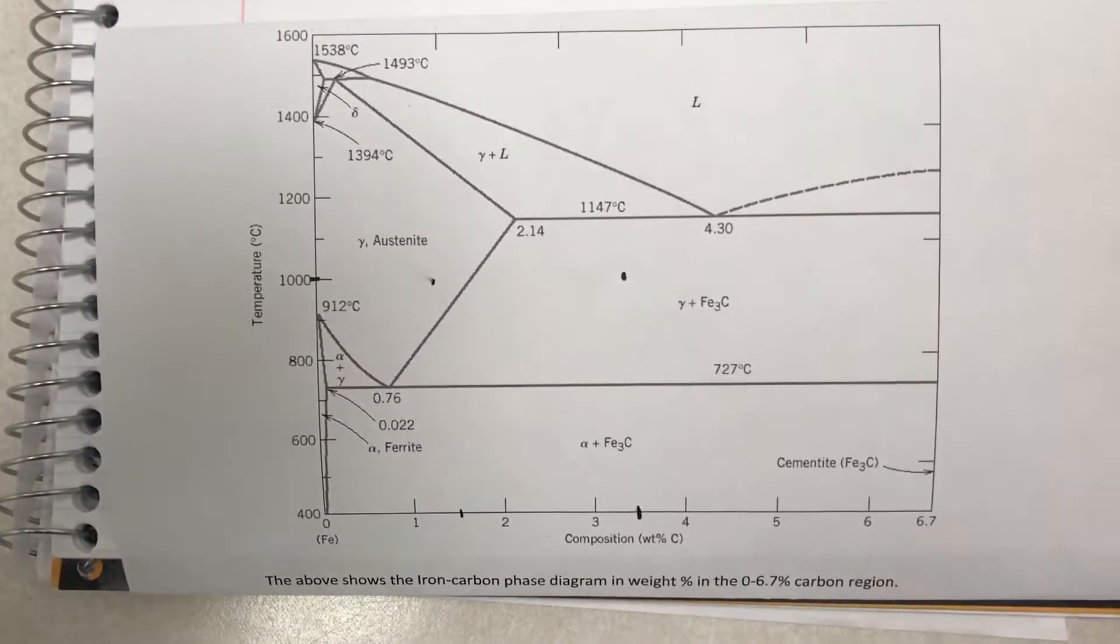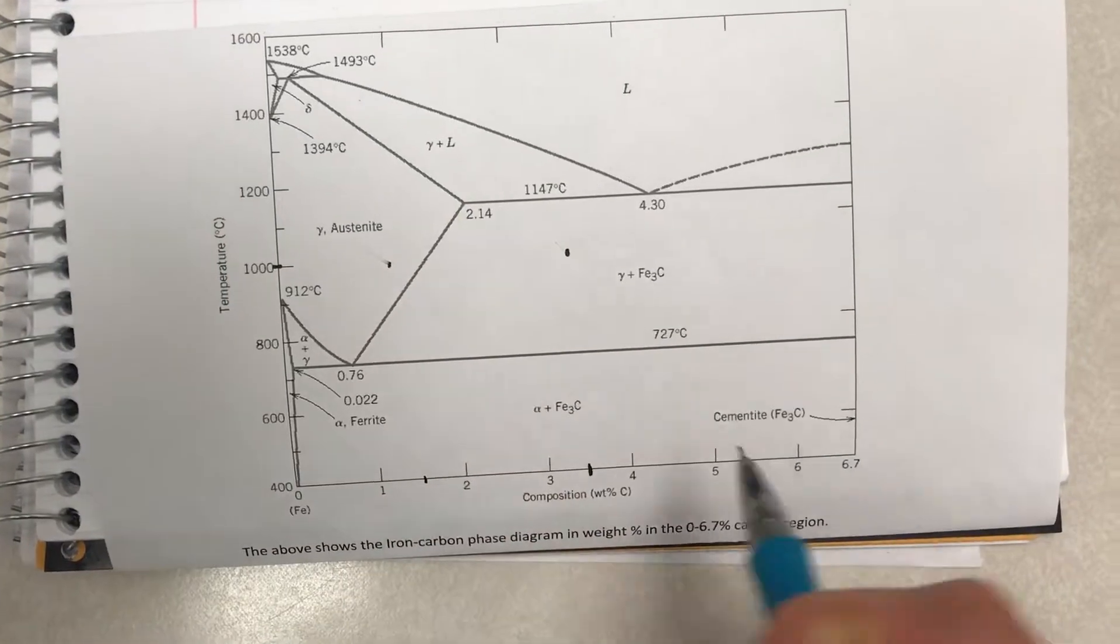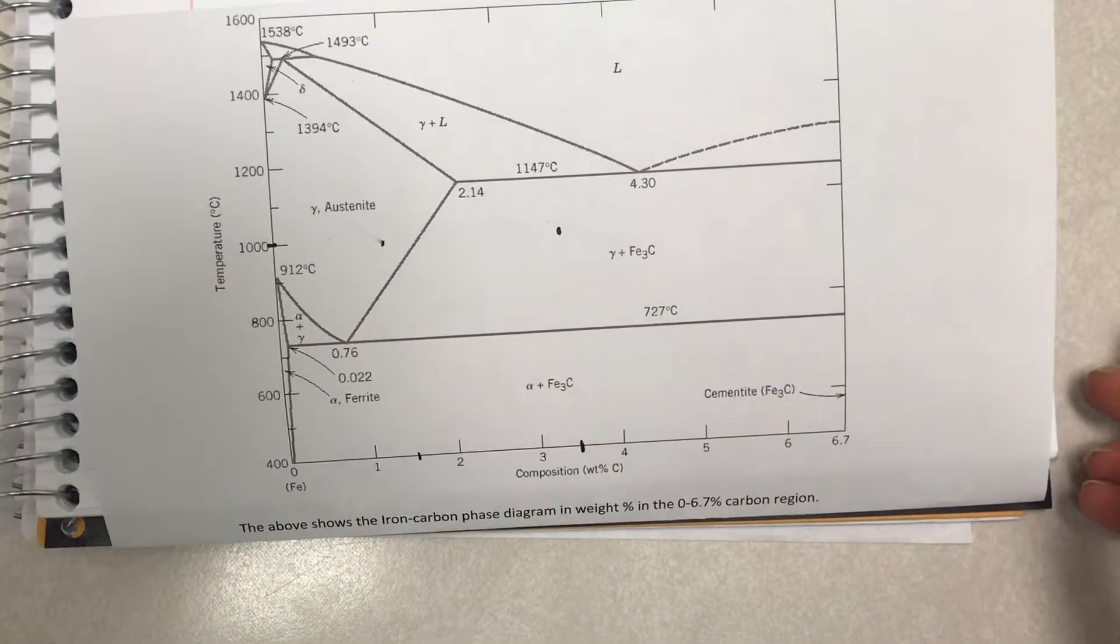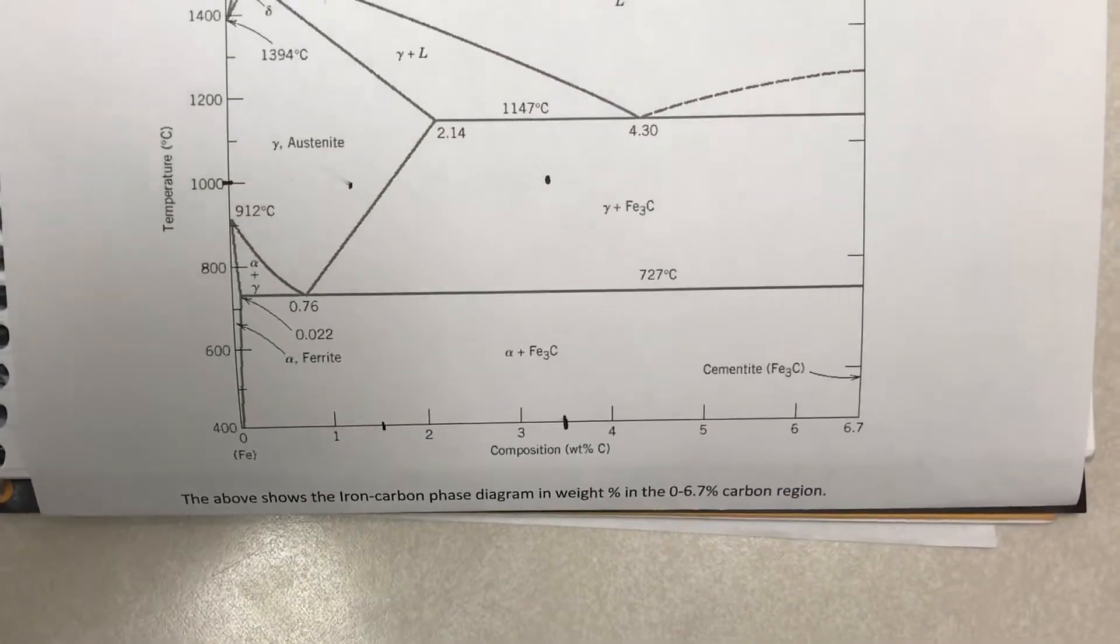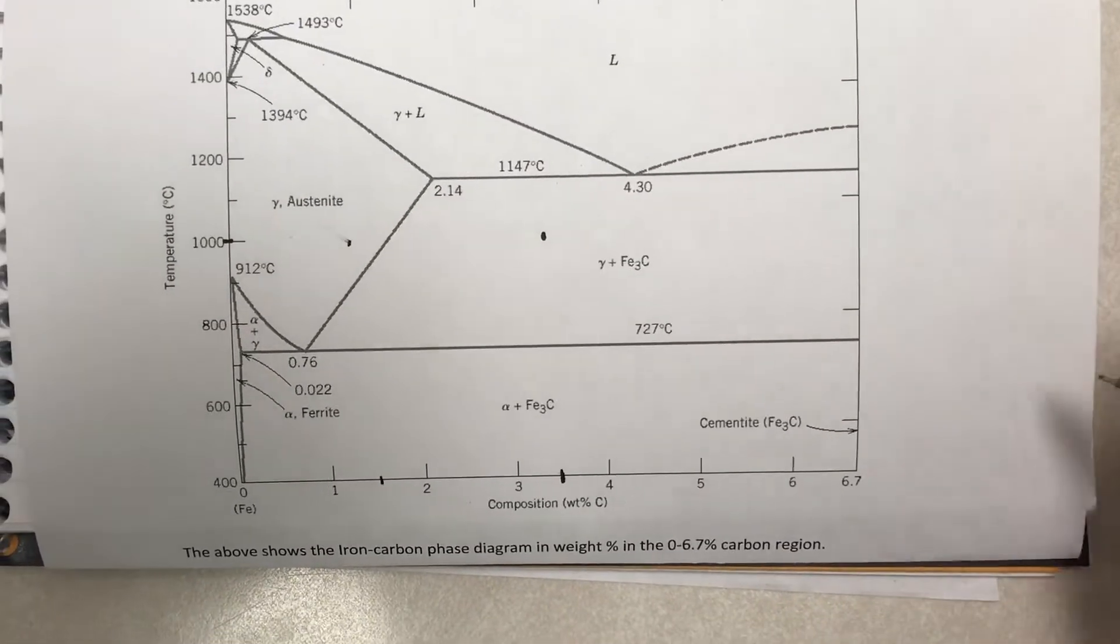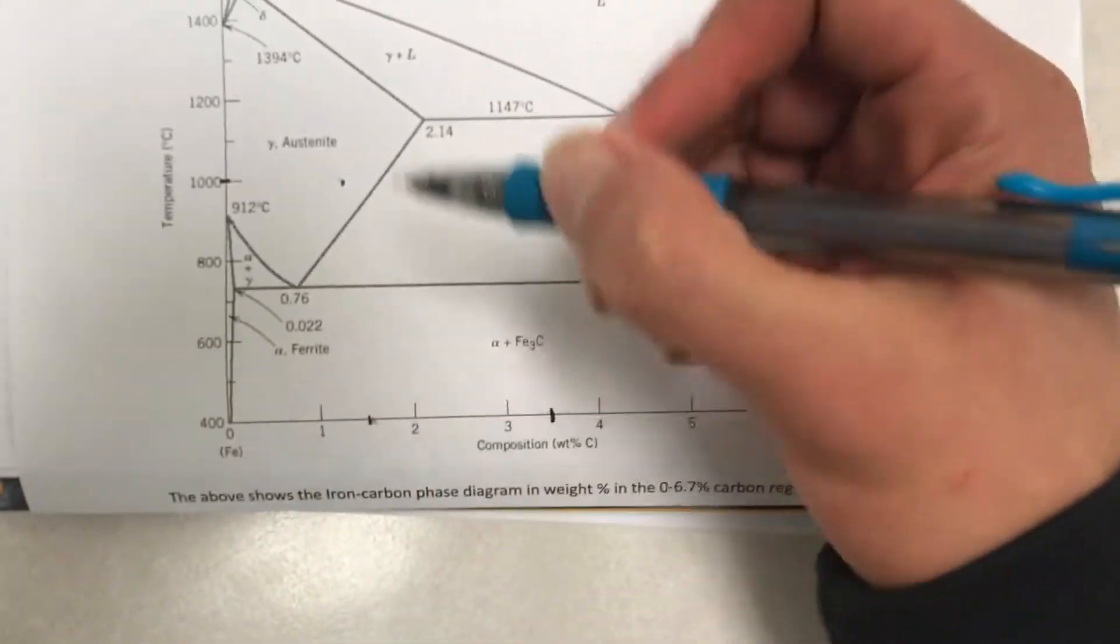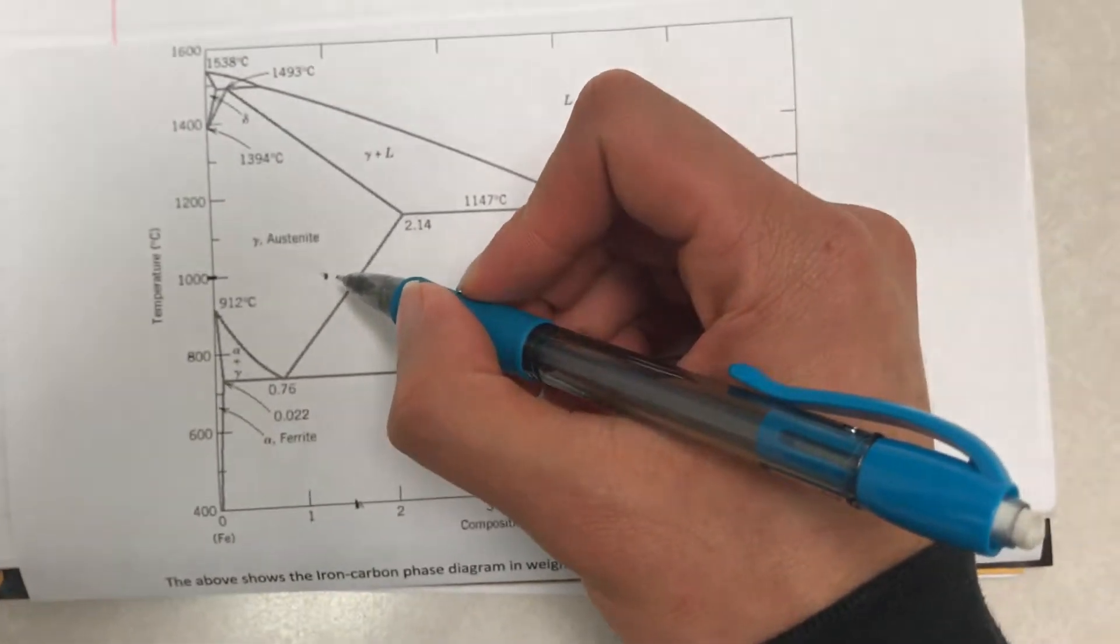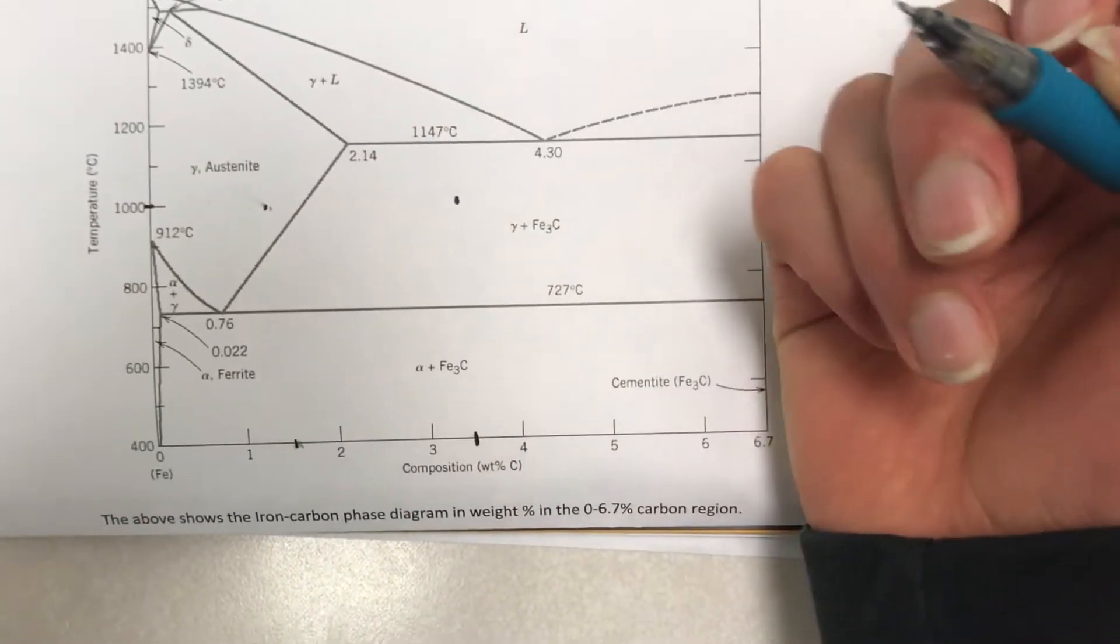This shows us where specific phases can be found according to the weight composition and temperature. For example, if we were to ask what phase is found at a weight composition of 1.5% carbon, which is right here, and at the temperature of 1000 degrees Celsius, which is right here, you can see that only the Austenite phase is found.